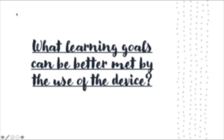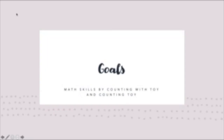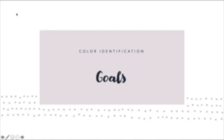What learning goals can be better met with this device? The first is developing stronger fine and gross motor skills by sorting and handling the tools — for example, pulling out the pieces from the Piggy Pine toy and putting them back, or pressing the piano keys, which can also be used with a switch. Second, math skills by counting with the toy — like pressing a piano key and having it say one, two, three. The last goal is color identification: pressing a color on the Nursery Rhyme Callipitor causes it to say the color, which is a great way for kids learning their colors.